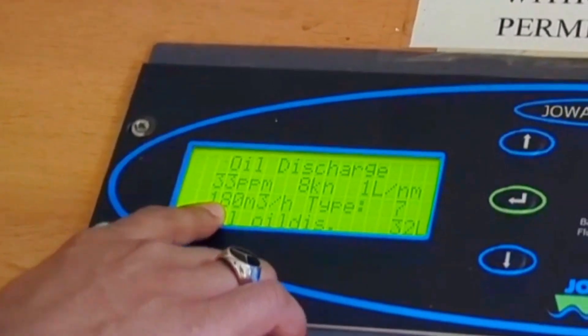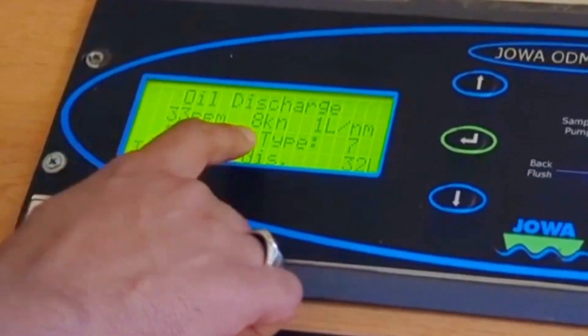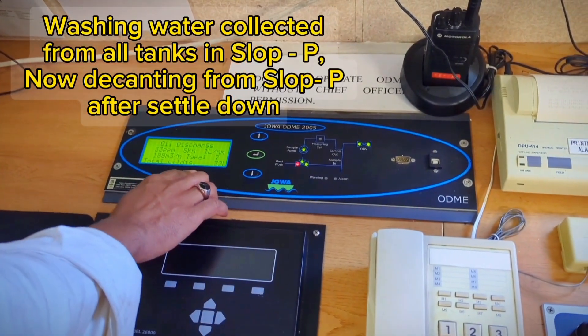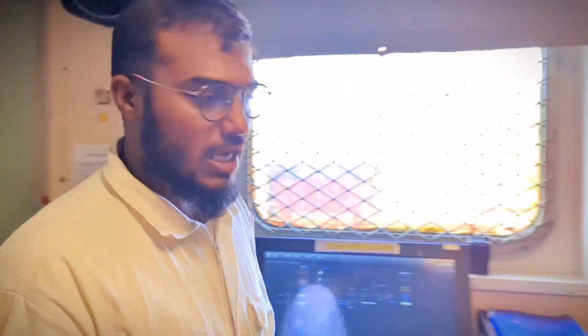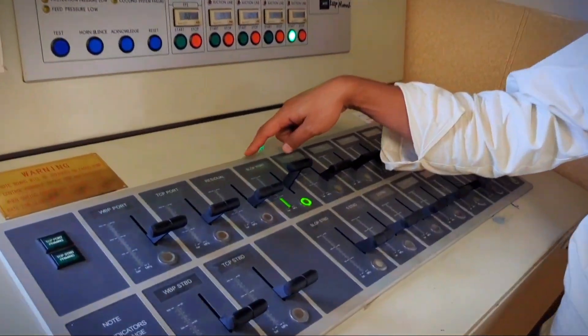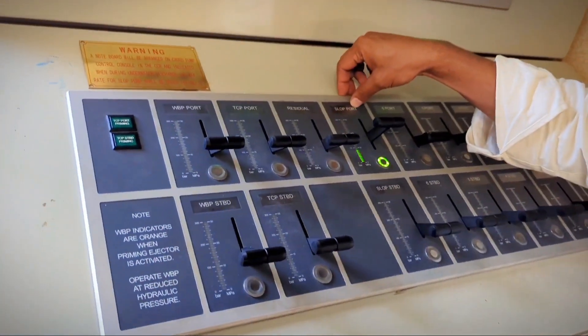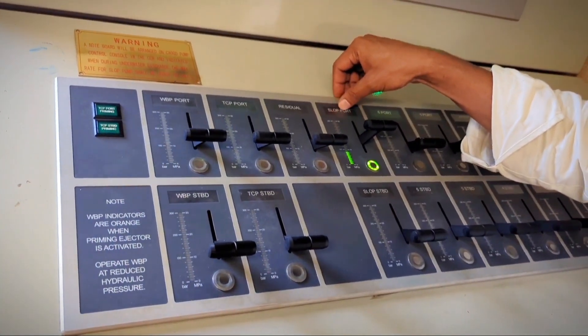And the flow rate right now is 180 cubic per hour. After collecting the wash water I am now decanting. For this operation, discharging from slop port, I am decanting from slop port.